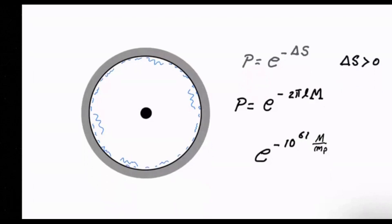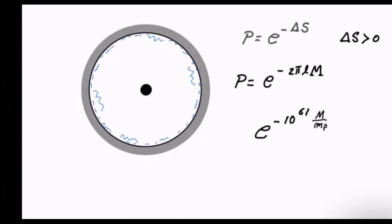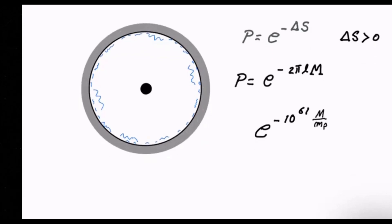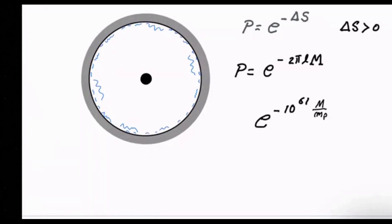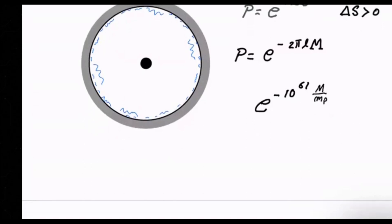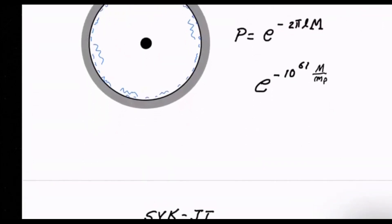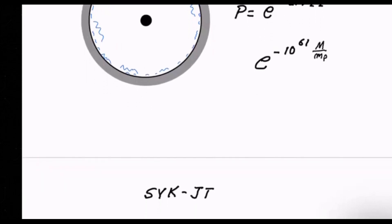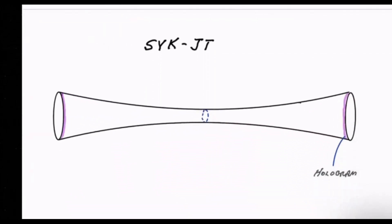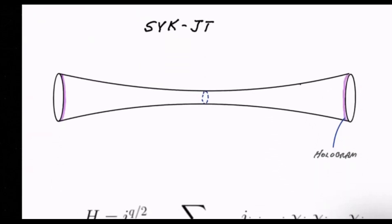One can calculate very easily the probability for the nucleation of such a black hole, even if it were just a black hole of Planckian mass. The probability for the nucleation of it would be E to the minus 10 to the 61 in units in which M is represented in the Planck mass. So these are incredibly rare fluctuations. But in fact, they're all that really happens in de Sitter space. And that is what a theory of de Sitter space will be telling us about.